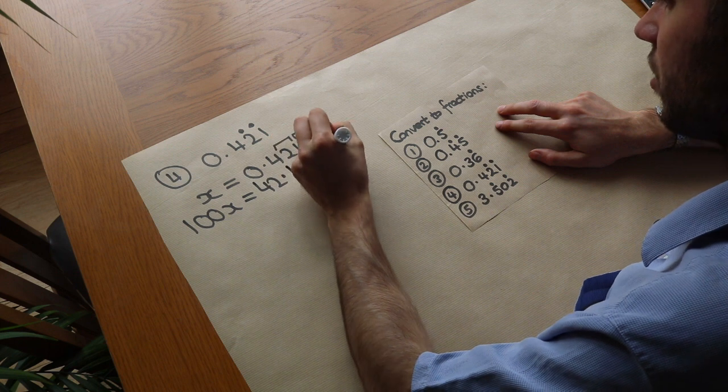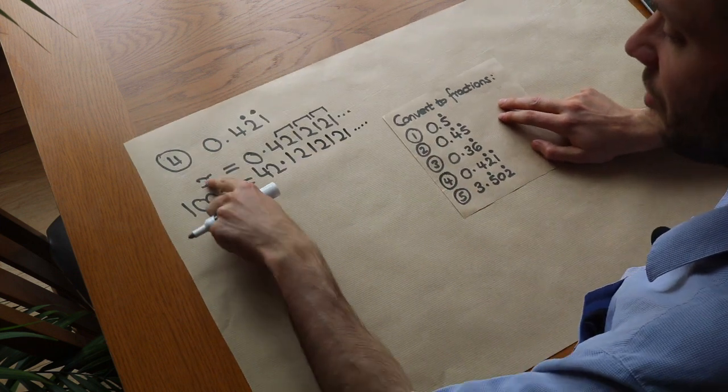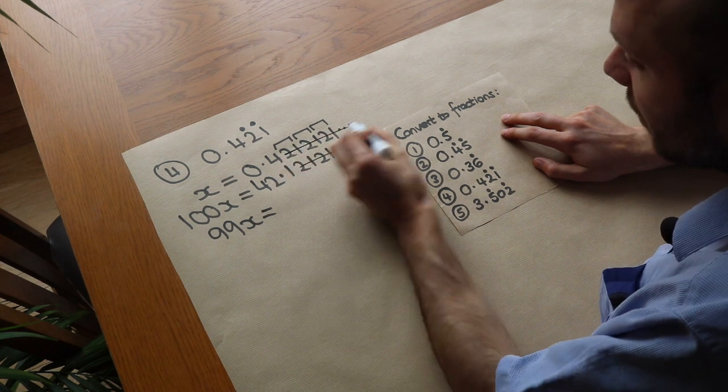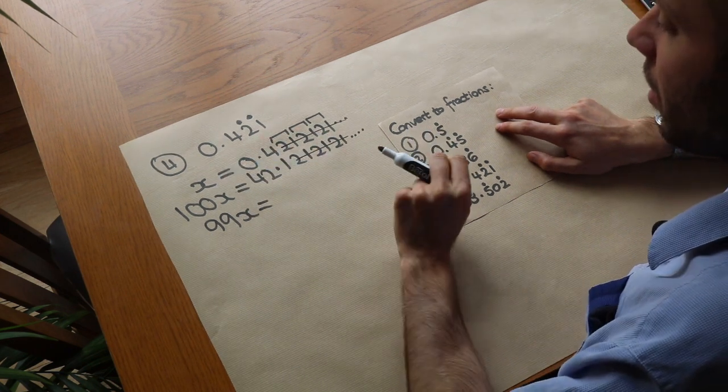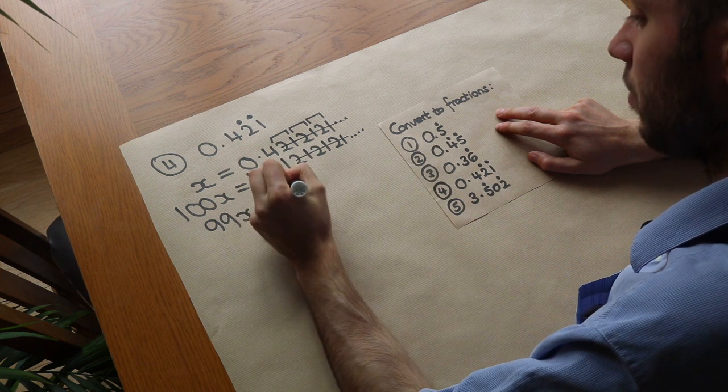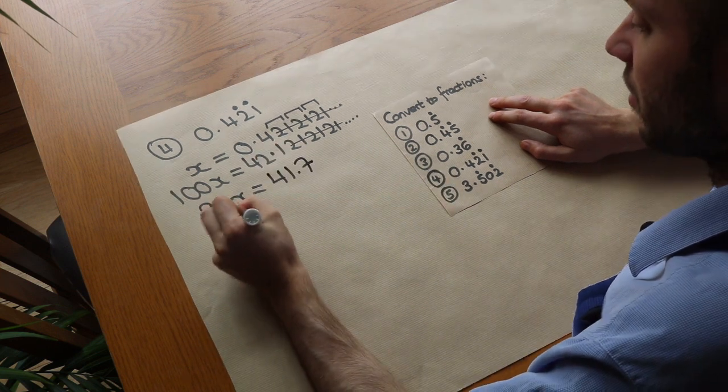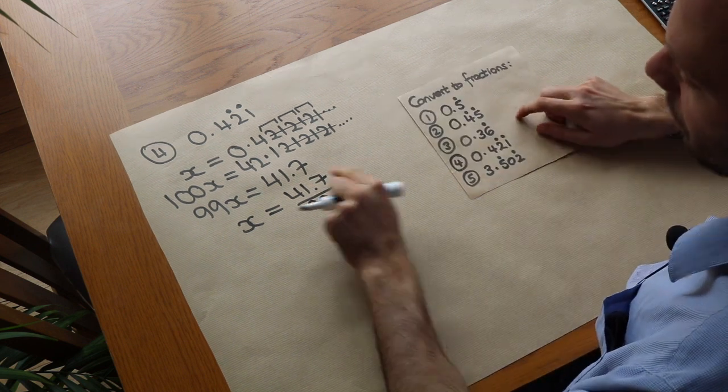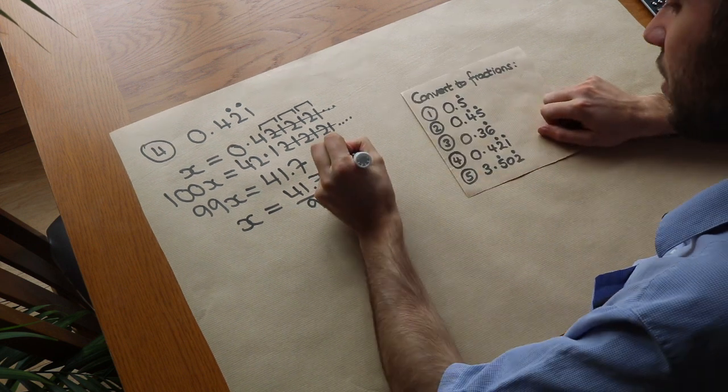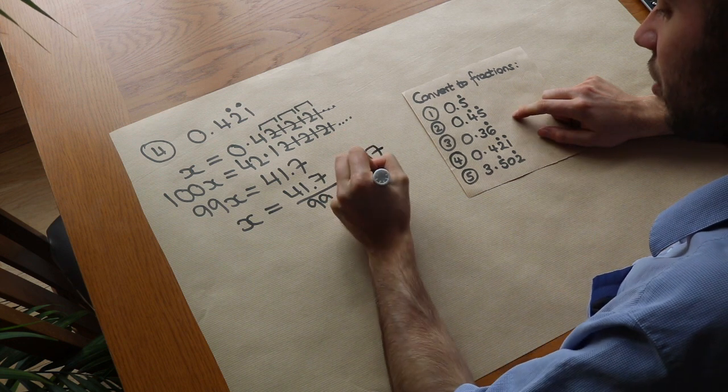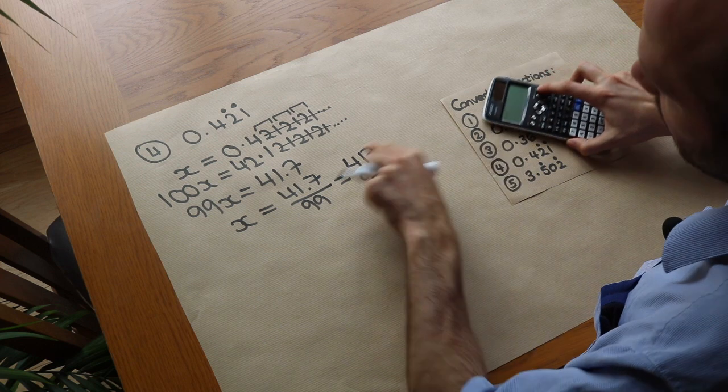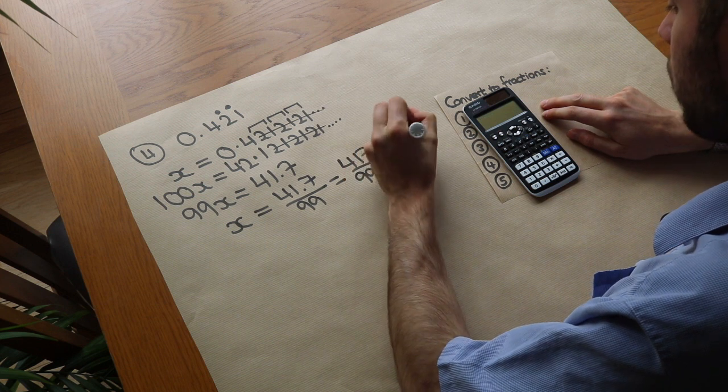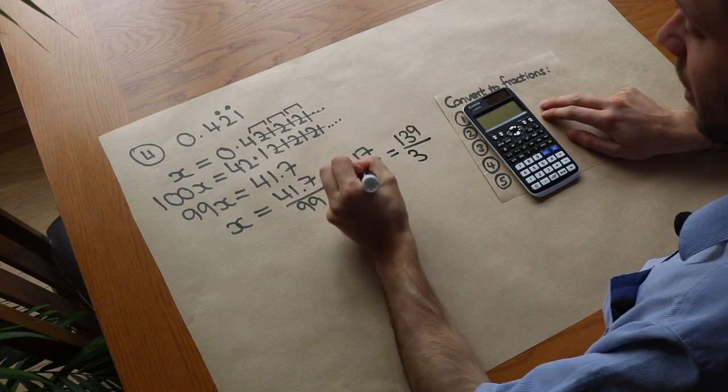1, 2, 1, 2 repeating. And if we subtract these 100x minus x is 99x. And then when we subtract these, well these all cancel because they're the same. So we're left with 42.1 minus 0.4 which is 41.7. Then we do as we did before. We divide both sides by 99. Now that's a decimal. So we multiply top and bottom by 10. So we get whole numbers. It's 417 over 990. And then we can simplify that fraction. But I'm just going to cheat at this point and do that fraction in my calculator. It simplifies to 139 over 330. So we could have divided both of those by 3.